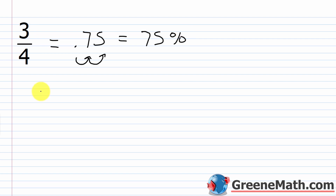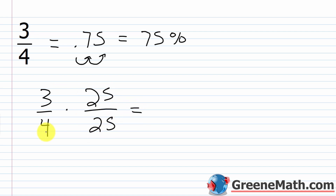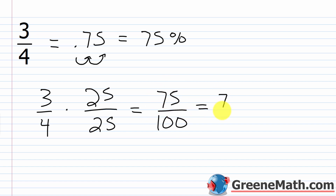The quicker way: I have three fourths, and I can multiply 4 times what to get to 100. Take 100 divided by 4 — that's 25 — so 4 times 25 is 100. We multiply by 25 over 25, since that gives a denominator of 100. 3 times 25 is 75. Now I have a fraction whose denominator is 100, so I take the numerator and follow it with a percentage symbol. So 3 fourths is equal to 75 over 100, and that's equal to 75%.